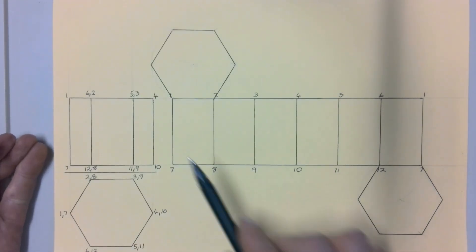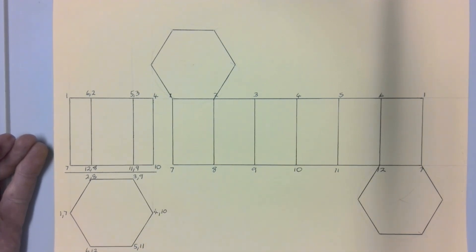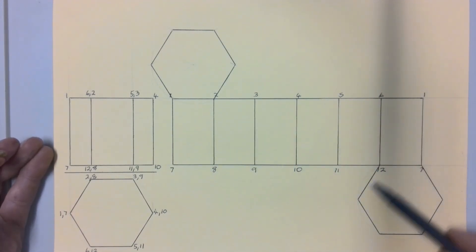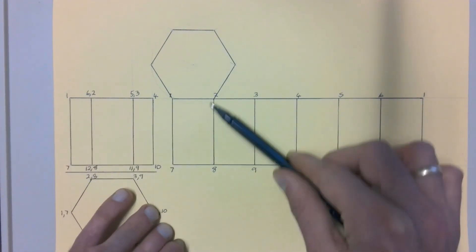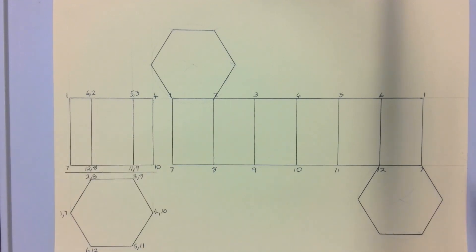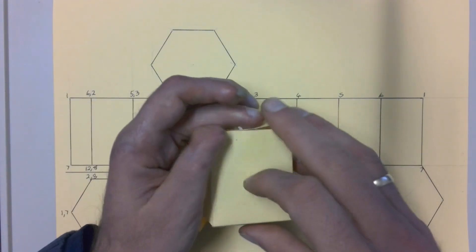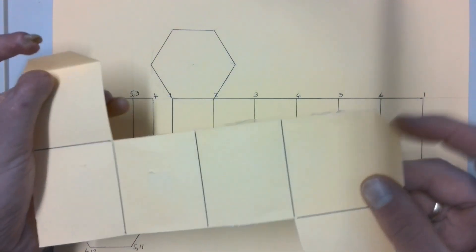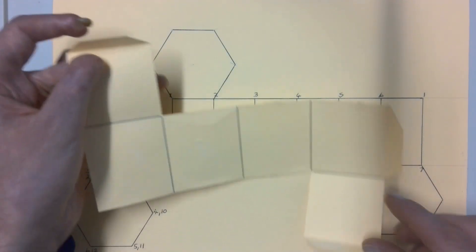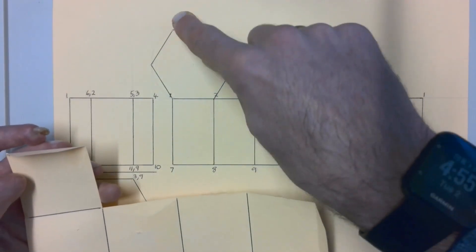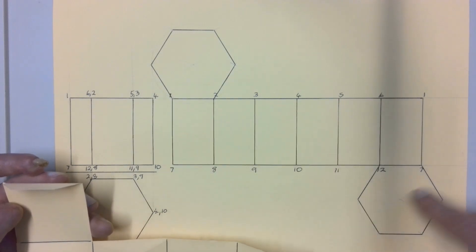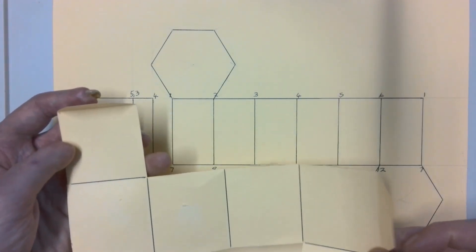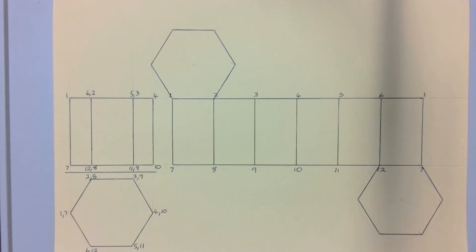And that's our completed development — or net — of our hexagonal prism. If you take this and cut it out along each of these lines, you'd be able to fold it up along each of the edges and build yourself a hexagonal prism, the same as I've done here with my square-based prism. You'll notice that on my prism I've got a couple of extra flaps drawn in to make it easier to put the shape together. You can draw those in on the edges of your development, then cut them out the same way to put your development together and make your three-dimensional shape.